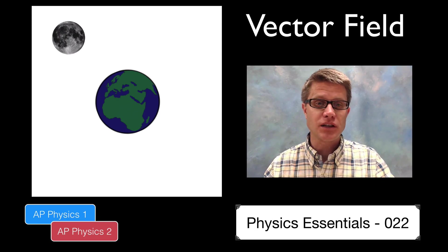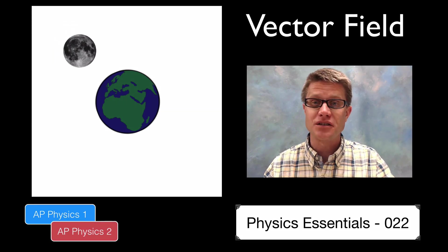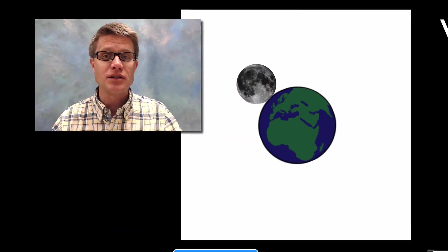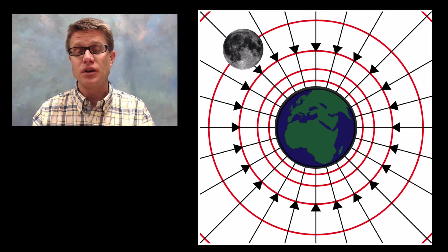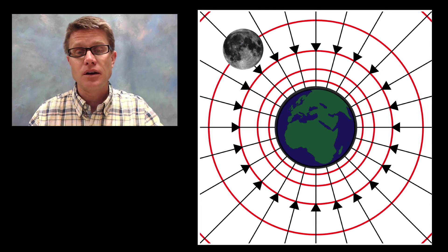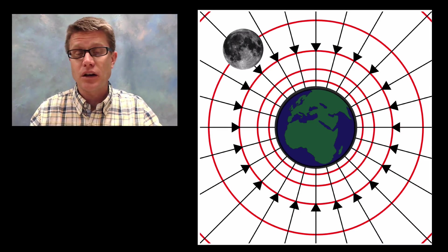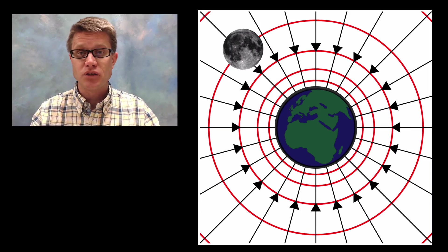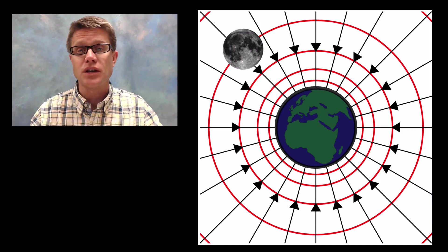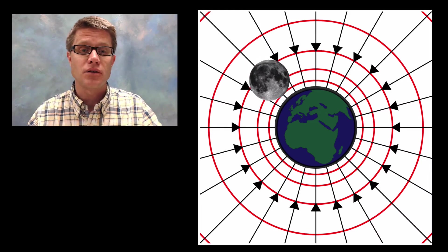If I could hold the moon in place and just let it go, it would crash into the earth. The reason why is that there is a gravitational force pulling the moon towards the earth. We could represent that with a vector field, a set of arrows that show where this force is pointing. Those smaller circles show that the force is getting greater the closer that moon gets to the earth.